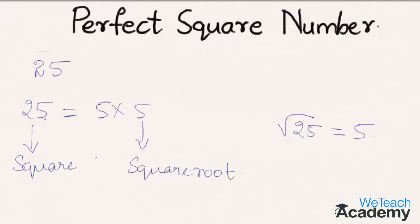So here we have 25, which can be written as product of two equal factors, 5. So we get here 25 as a perfect square number.